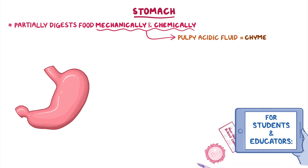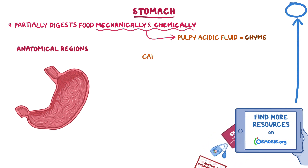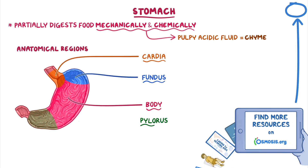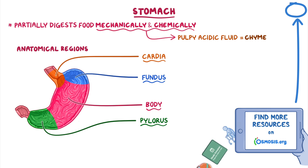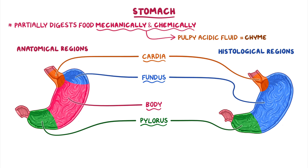The stomach is divided into four anatomical regions: the cardia, fundus, body, and pylorus. But the stomach is only divided into three histological regions — the cardia, fundus, and pylorus — because the fundus and the body are histologically identical, so both regions are called the fundus when referring to their histology.